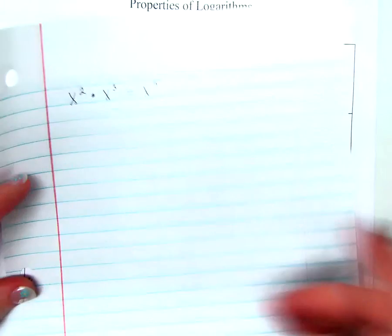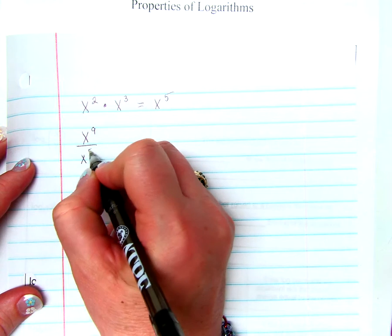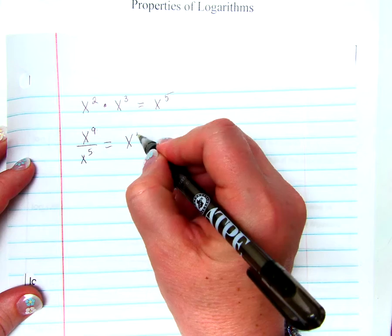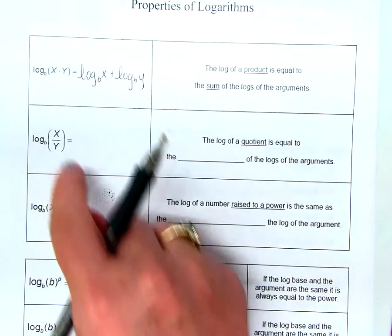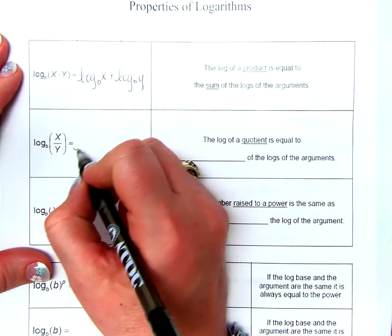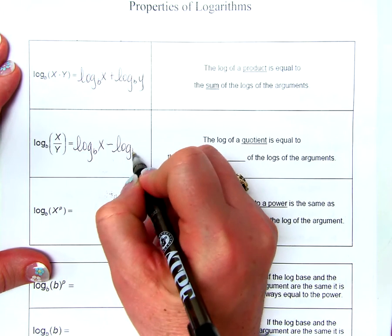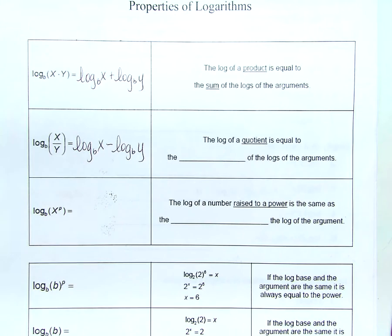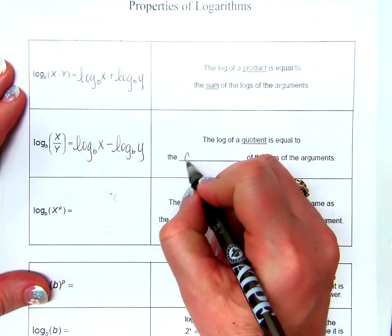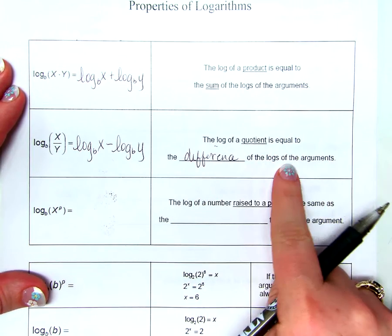Same way for this property. We said x to the ninth divided by x to the fifth. When we're dividing like bases, we subtract our exponents, so that would be x to the fourth. If we're dividing arguments and want to separate that out into two logarithms, we'd say log base B of x minus log base B of y, because the log of a quotient is equal to the difference of the logs of the arguments.